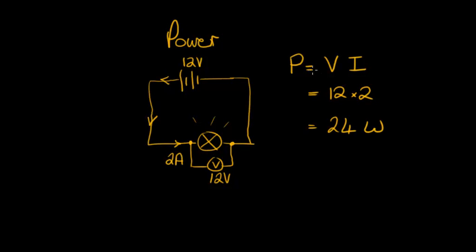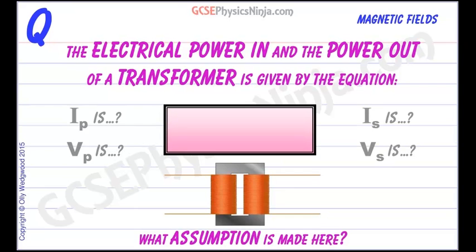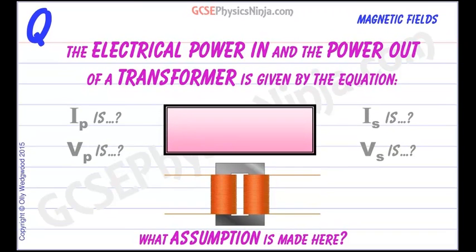This is also true for transformers and we can use this formula P equals V times I to link the input and output of a transformer. So the electrical power in and the power out of a transformer is given by the equation.